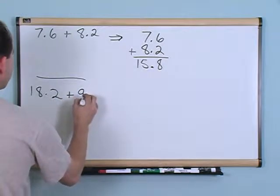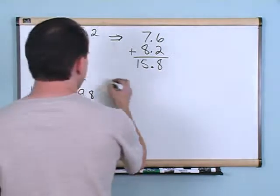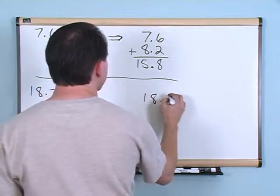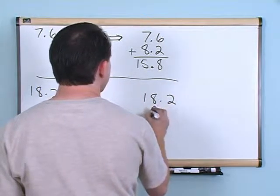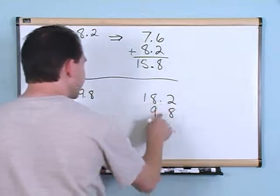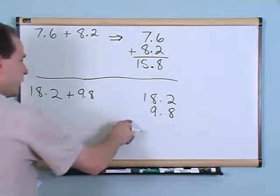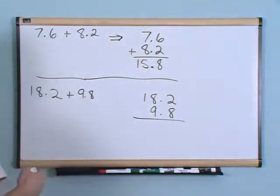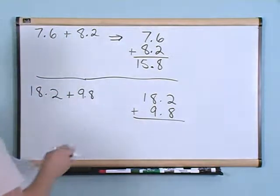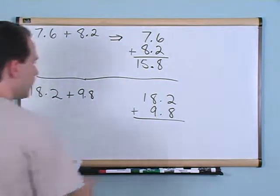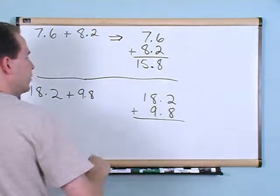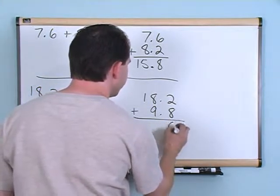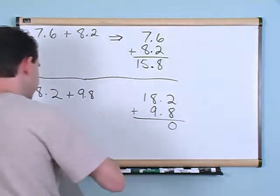Nothing special, nothing hard. What if you had something like 18.2 plus 9.8? Again you write 18.2 and 9.8, line your decimals up and put your numbers one on top of the other, then go ahead and add just like you always would.